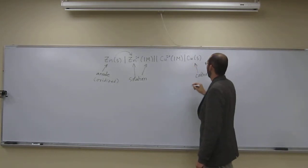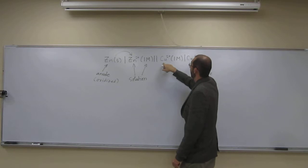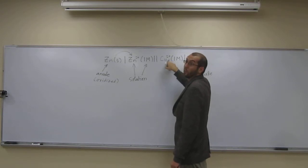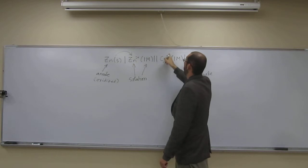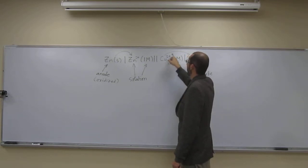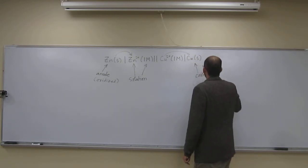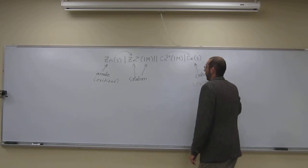Remember, the cathode is this copper. At the cathode, reduction happens. The Cu²⁺ is actually being reduced because the electrons are flowing onto this Cu²⁺, and the Cu²⁺ is becoming Cu. So it's Cu²⁺ plus two electrons to become Cu. At the cathode, that reduction reaction is occurring.